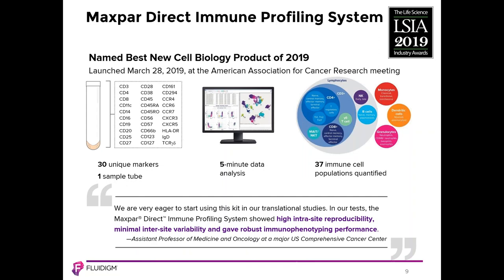Profiling the human immune system is a key application used in translational and clinical research to look for biomarkers of disease or response to therapy. It is essential to driving the search for more effective treatments for almost any disease — cancer, autoimmune diseases, or infectious disease. The Maxpar Direct Immune Profiling System is a truly revolutionary approach to immune monitoring and is absolutely unique in the cytometry market. The researcher just has to add a small amount of blood to a lyophilized pellet of 30 antibodies in a single tube, process it, collect the sample on a Helios mass cytometer, and perform data analysis with specialized software that produces quantification of 37 key immune cell populations in a matter of minutes.